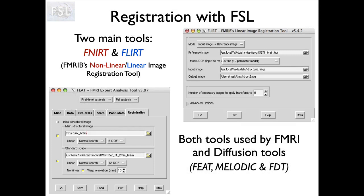We have two main tools within FSL to do registration: a non-linear tool called FNIRT and a linear tool called FLIRT. These have their own GUIs, but registration is also embedded in every kind of analysis we do, occurring as a tab within bigger tools such as FEAT, and there's also a registration component in the diffusion tools.